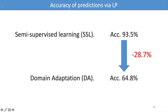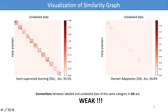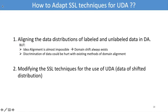Empirically, we find that results of label propagation on domain adaptation are much lower than that of semi-supervised learning. Going a step further, we analyze the similarity graph in the two tasks and find that the connections between labeled and unlabeled data of the same category in domain adaptation are much weaker. The red points represent the connections between labeled and unlabeled data. The more red points, the stronger connection. To this end, we study how to adapt SSL techniques for use on domain adaptation.